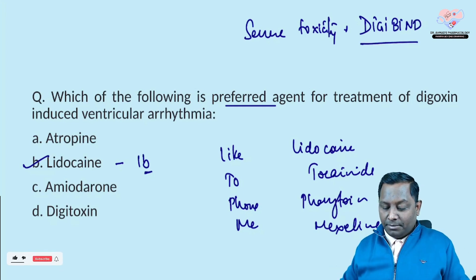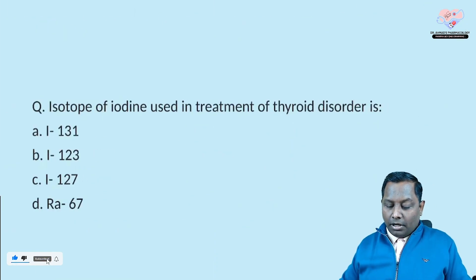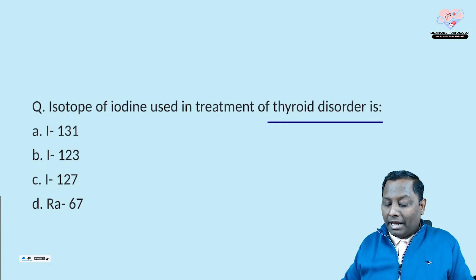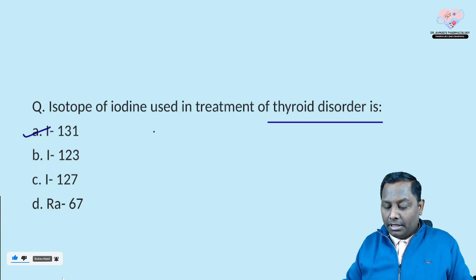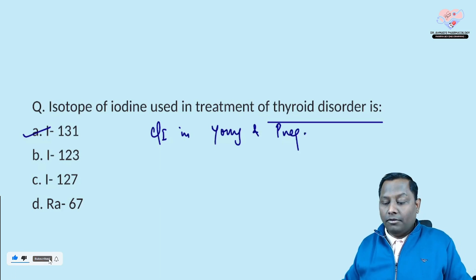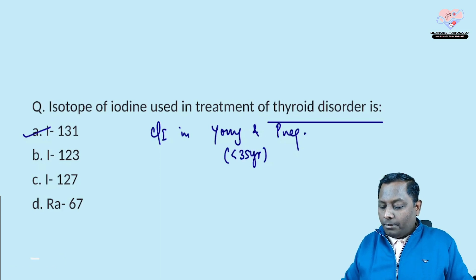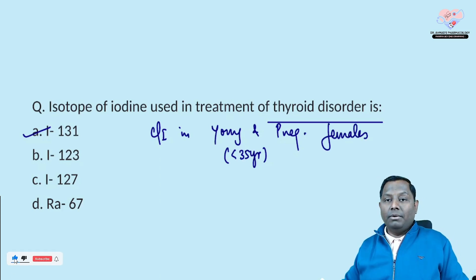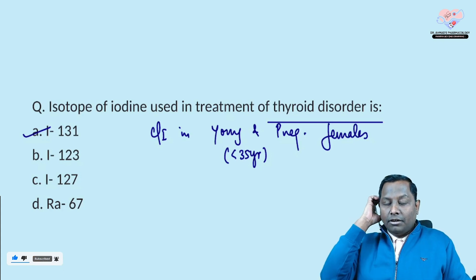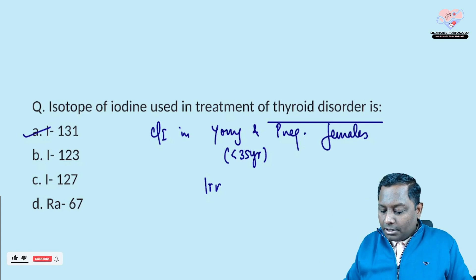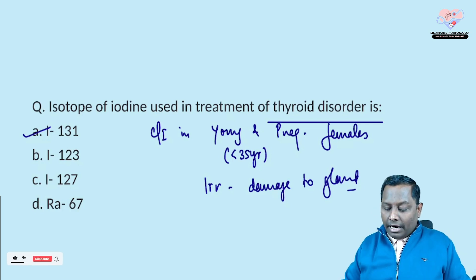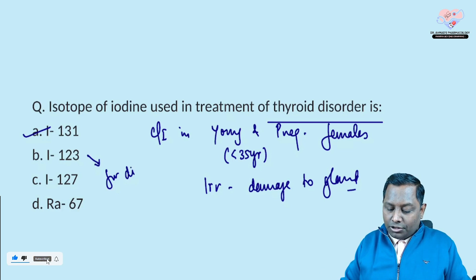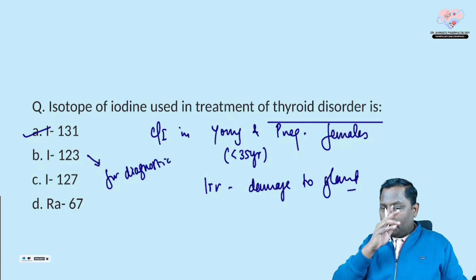The next question: which isotope of iodine is used in the treatment of thyroid disorder? For thyroid disorder management, we use Iodine-131, which emits beta rays. Remember, it is contraindicated in young patients (less than 35 years) and in pregnancy. Patients who receive radioactive iodine will have irreversible damage to the thyroid gland, and therefore lifelong thyroid supplementation will be required. Iodine-131 is mainly utilized for diagnostic purposes as well.